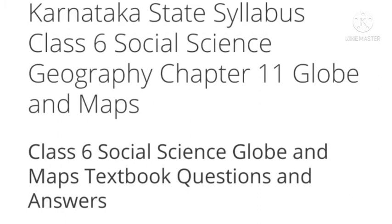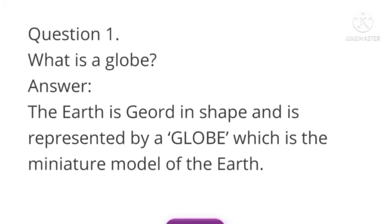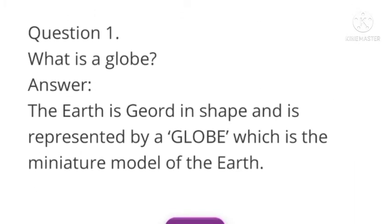The first question is: What is a globe? Answer: The Earth is geoid in shape and is represented by a globe, which is the miniature model of the Earth.